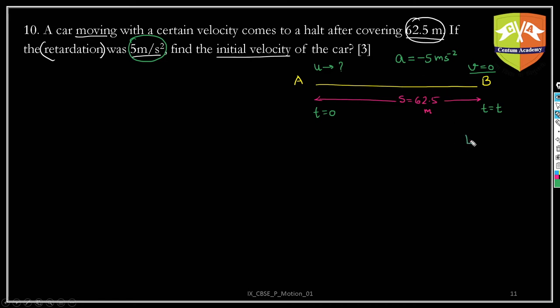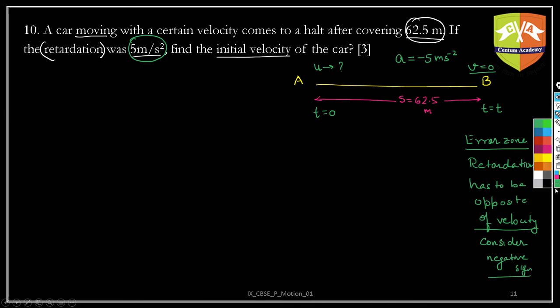So hence, always remember error zone. What is the error zone in this problem? Retardation has to be opposite of velocity. Or the direction of retardation is opposite of velocity. So hence, you have to consider negative sign. If you have taken velocity as positive, consider negative sign. If you miss it, then you lose marks.